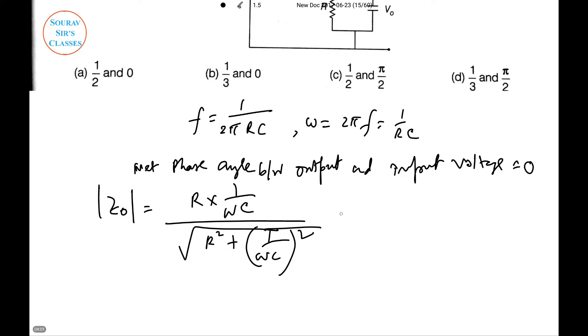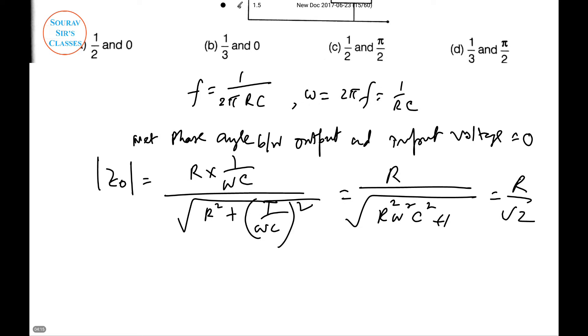This simplifies to R/√2. The input impedance Zi = √(R² + (1/ωC)²).